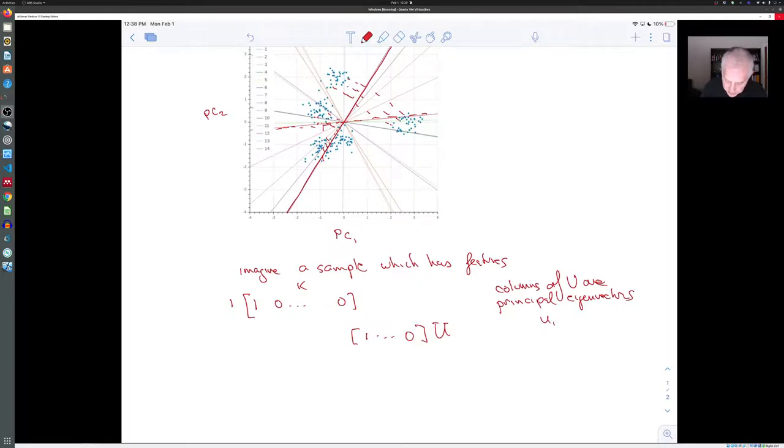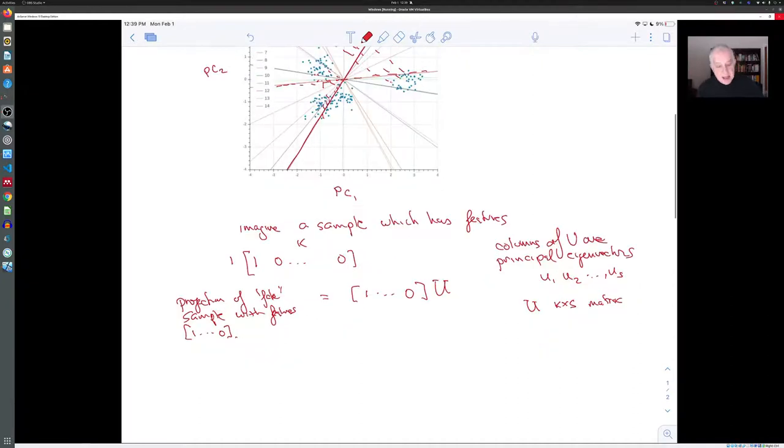With eigenvalues U1, U2, and there might be more of them. We're only using two here, but there could be U1 up to US. So U is a K by S matrix whose columns are S principal eigenvectors for the covariance matrix. And this is the projection of the fake sample with features one, zero.